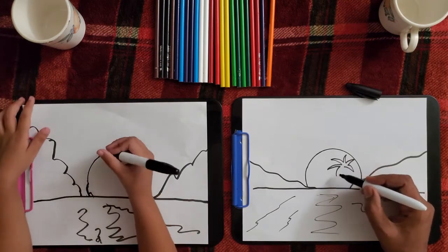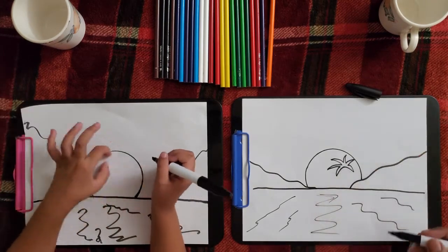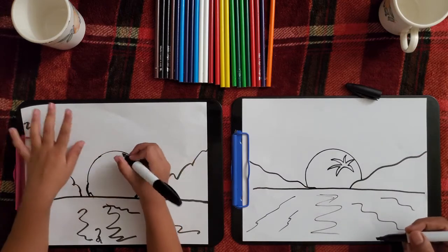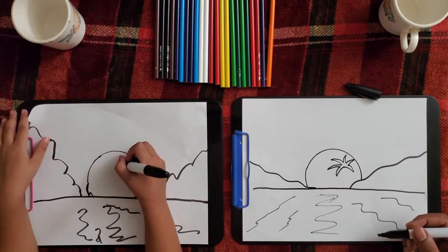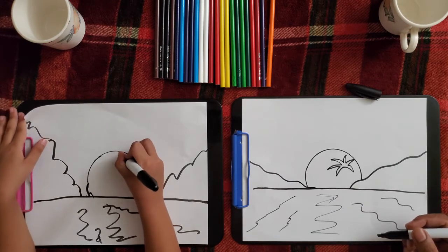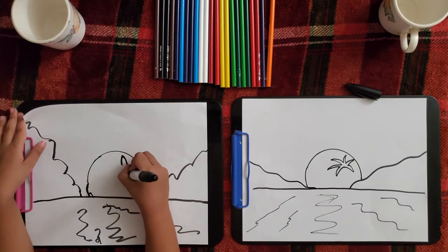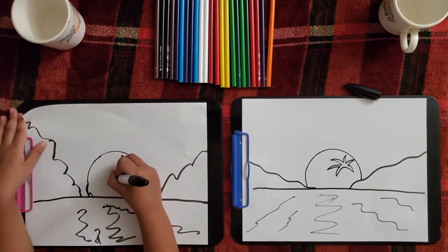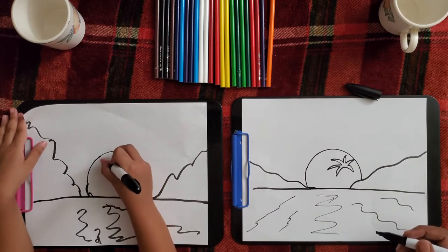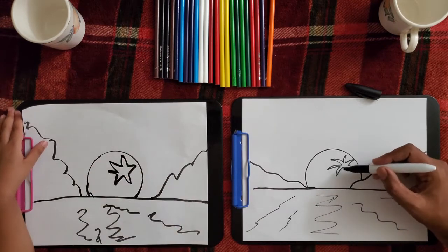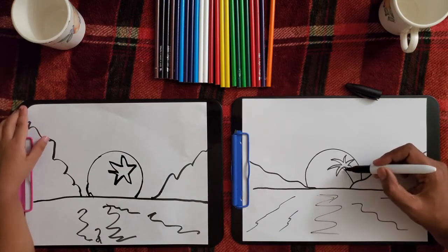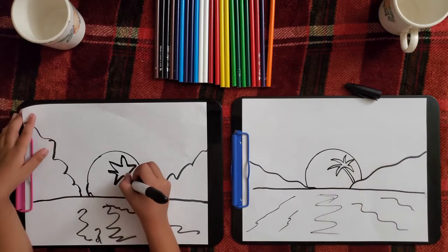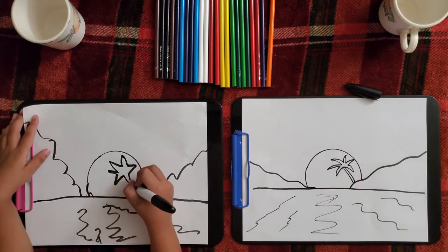And draw the tree, like in the sun. I don't know, like you can call it a star. It's a coconut tree. And draw its lines.